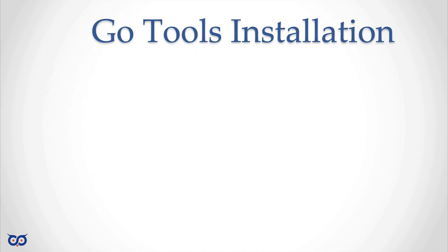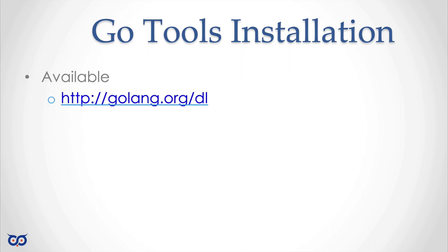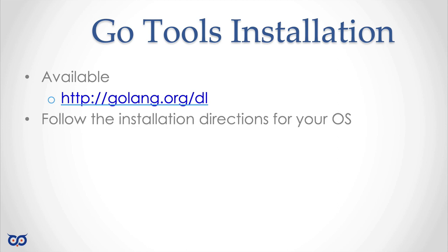The first thing we want to install are the Go tools — that's the most important thing we really need. You can get them at the download site by going to golang.org, which is the website for the Go programming language, and then clicking the download link. Once you get there, follow the installation instructions for your particular OS. I'm on a Mac so I'll show my installation process, but be aware it might vary slightly for your particular system.